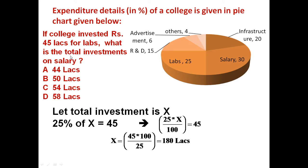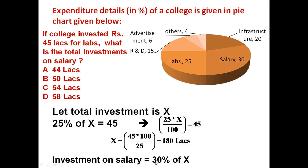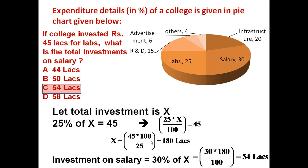Now the question is: what is the total investment on salary? On salary, 30% of total investment is there. Total investment is Rs. 180 lakhs, and salary is 30%. So investment on salary = 30% of X = 30 × 180 ÷ 100 = 54 lakhs. Total investment on salary is 54 lakhs, if total investment of the college is Rs. 180 lakhs.